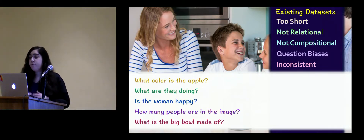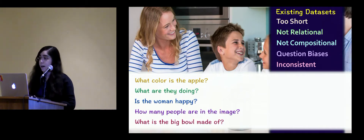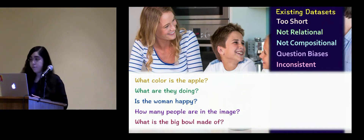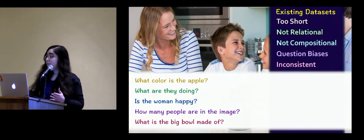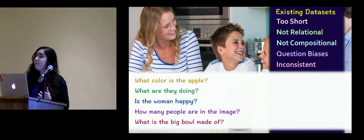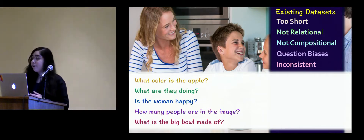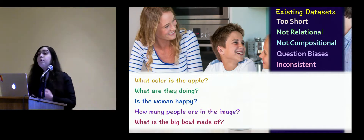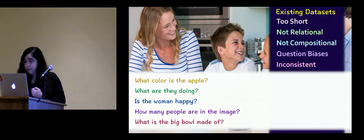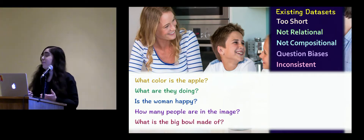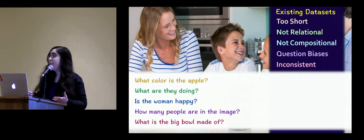Another main problem of existing VQA datasets is the very strong and dominant question biases they tend to suffer from. Because the world is indeed very biased — most apples are usually red, and most tables are usually made of wood. Statistical models can exploit these biases to make educated guesses and thereby circumvent the need for true visual understanding, which reduces the effectiveness of prior datasets in measuring what we are really interested in.